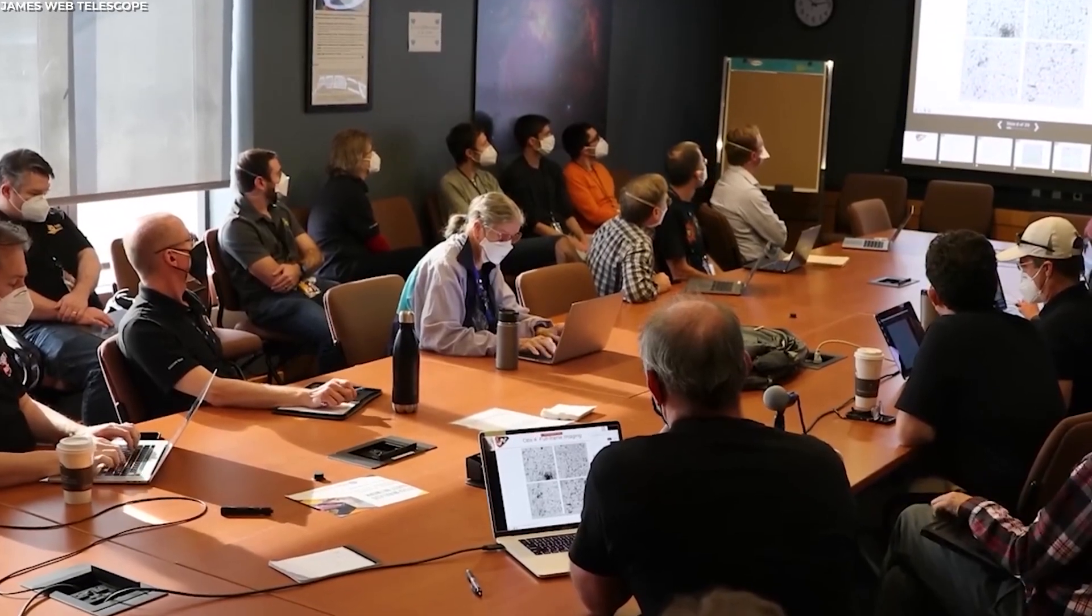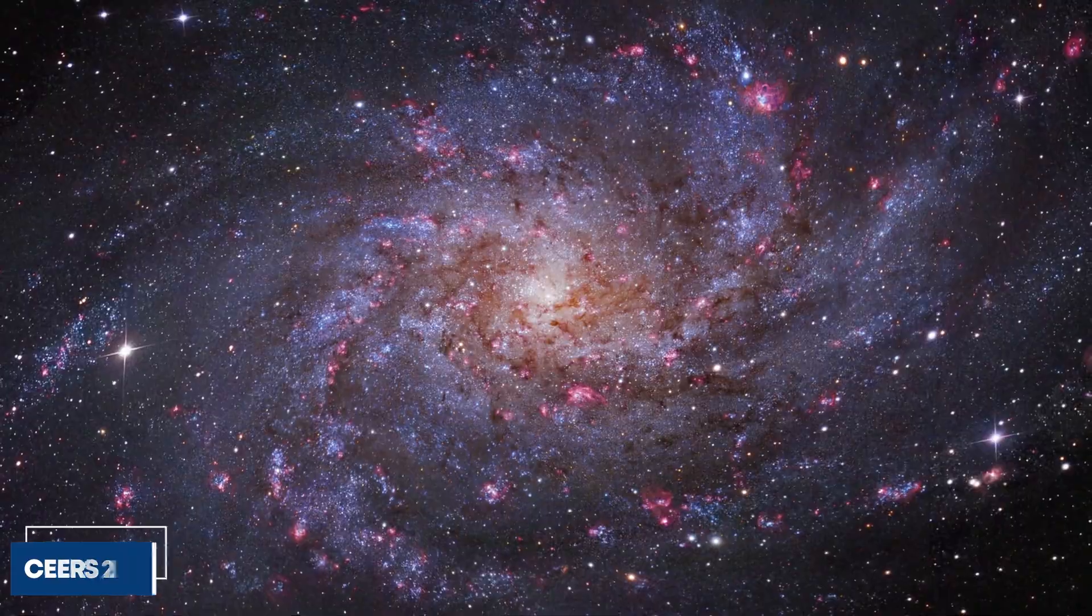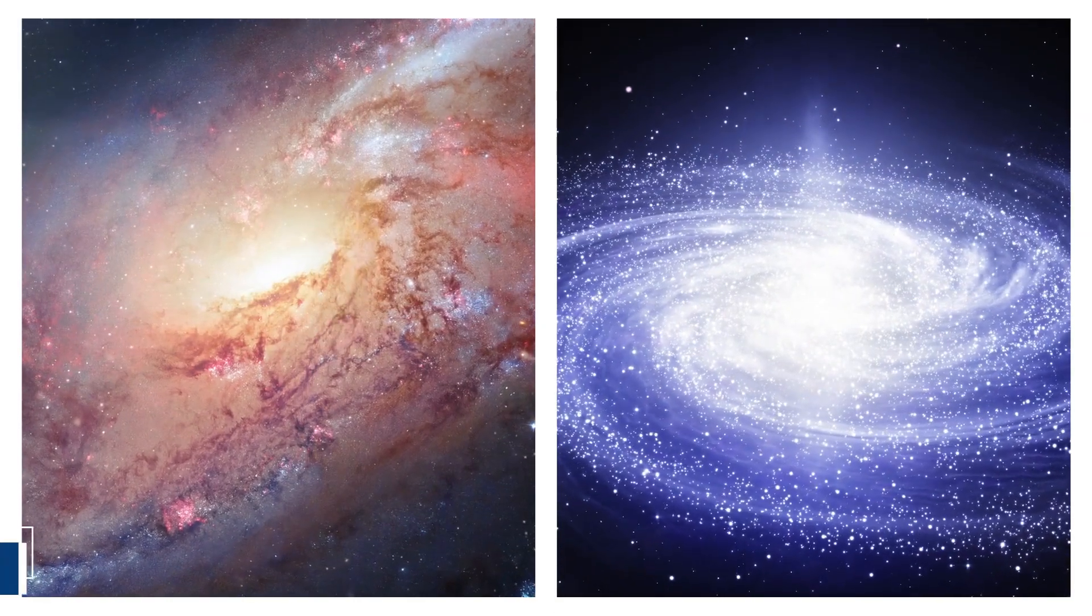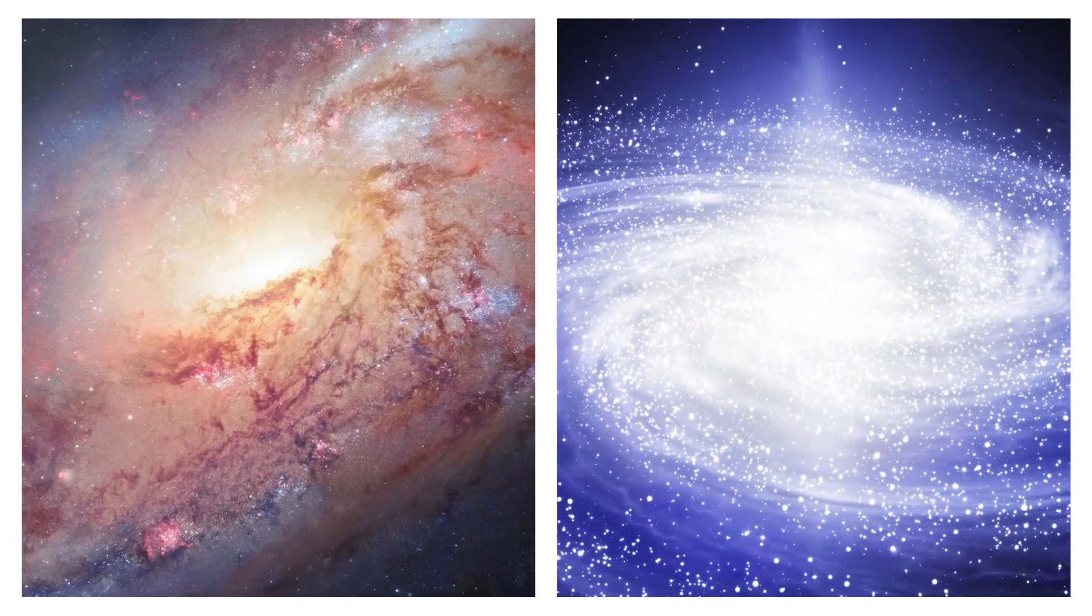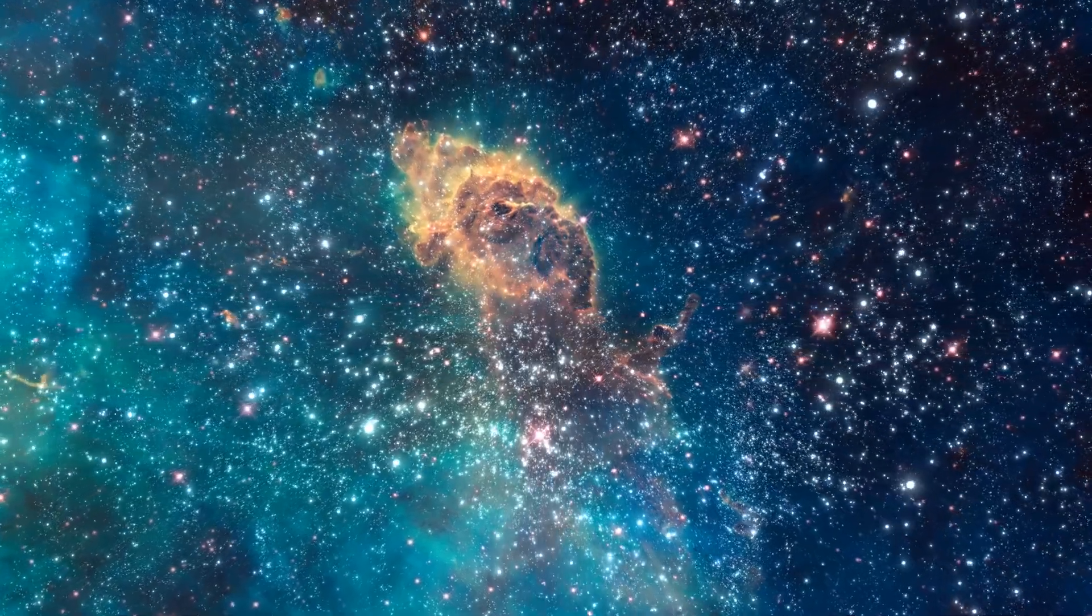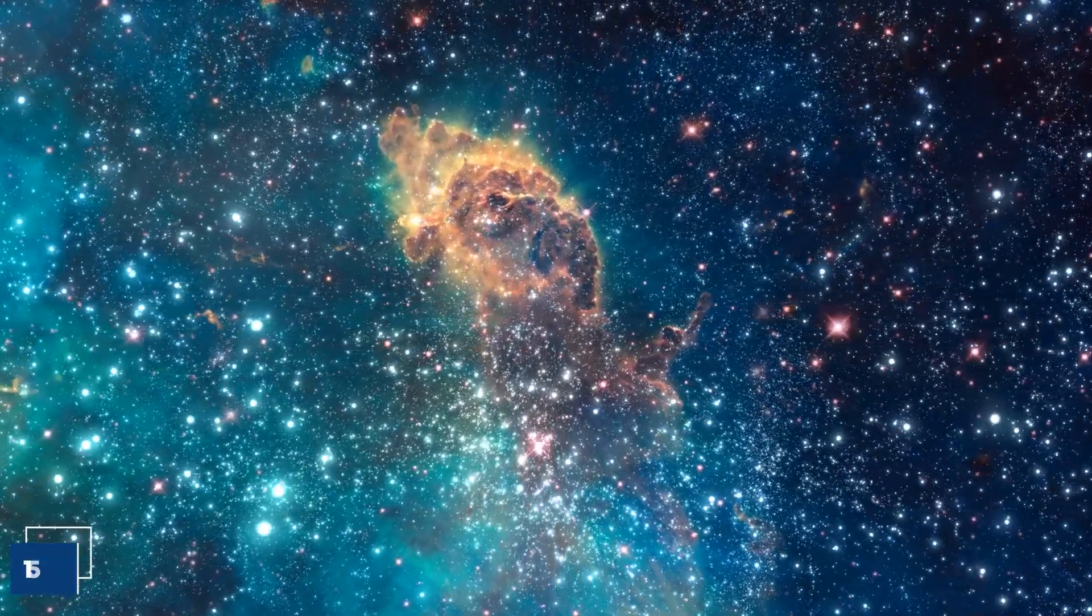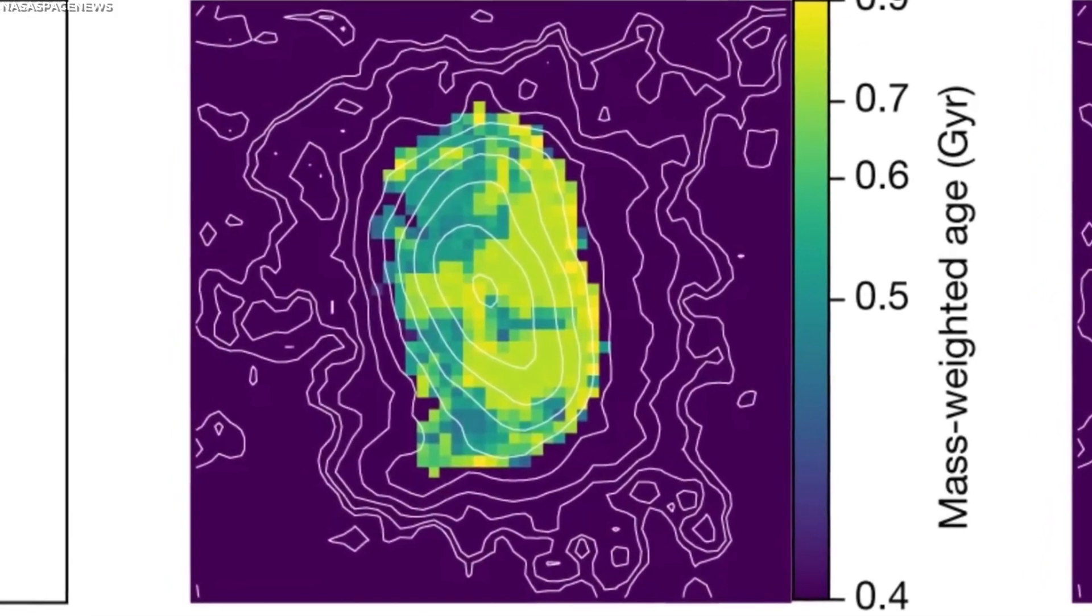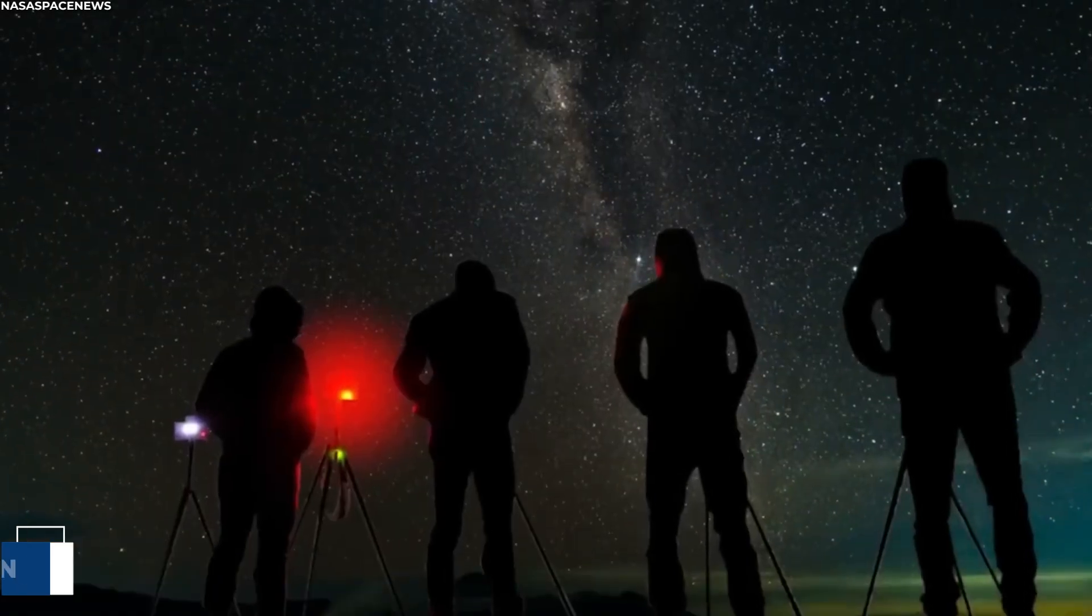One of the galaxies the James Webb Space Telescope recently discovered is SEARS T112, a galaxy that looks like our Milky Way and is over 11.7 billion years old. That's right, it dates back to when the universe was just a baby, about 15% of its current age.